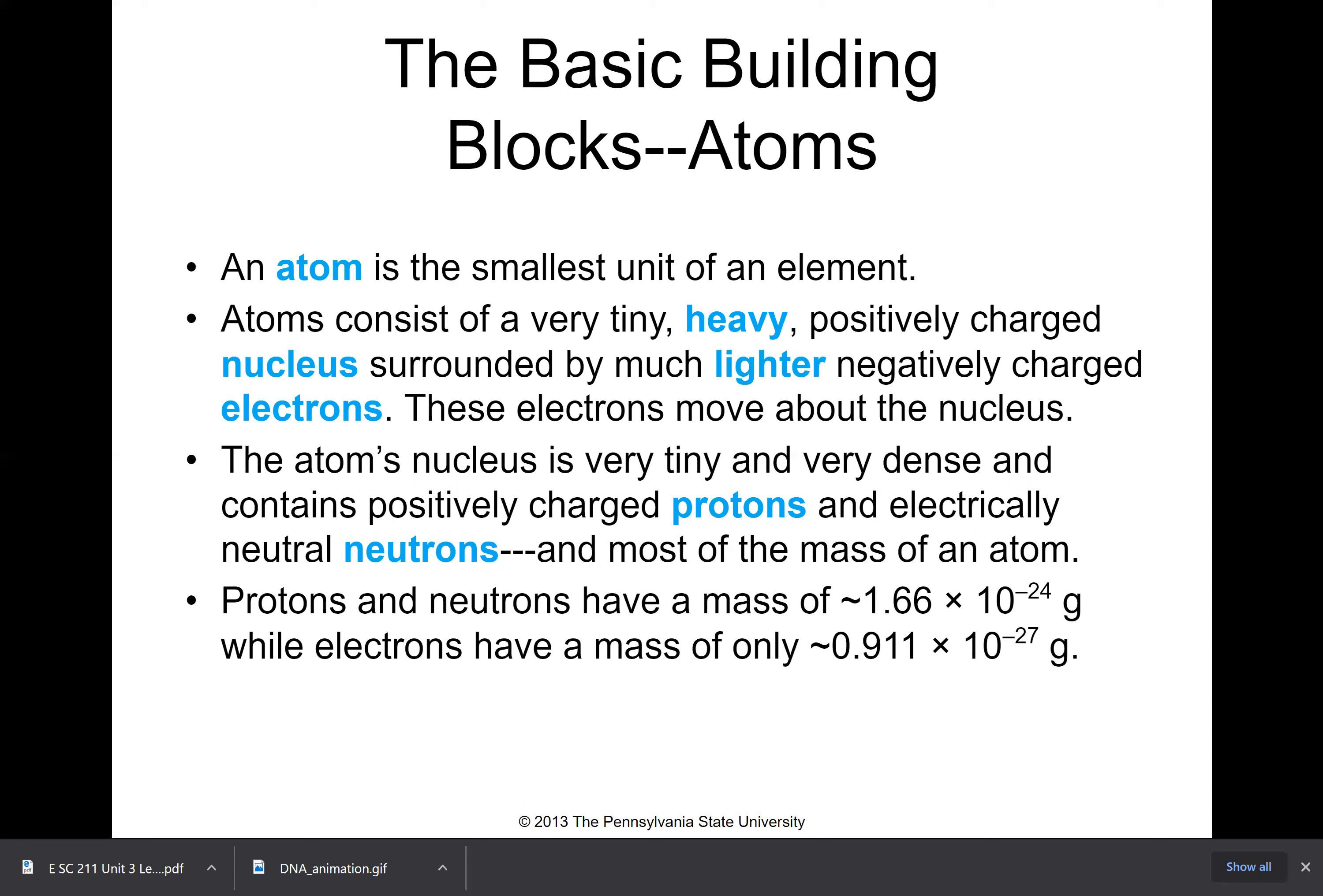The electrons have a mass of only 0.9 times 10 to the negative 27 grams. In chemistry, we did it in fractions where the electrons have about 1 over 1,840 of a proton. So electrons are almost 2000 times lighter than a proton—very, very small.